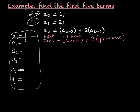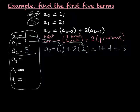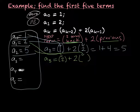A sub 2 equals two terms back — which is A sub 0, or 1 — plus 2 times the previous term, which is 2. So I have 1 plus 2 times 2 equals 1 plus 4, which equals 5. My A sub 2 term is 5. For A sub 3, two terms back is A sub 1, which is 2. So I have 2 plus 2 times the previous term, which is 5. That gives 2 plus 10, which is 12.